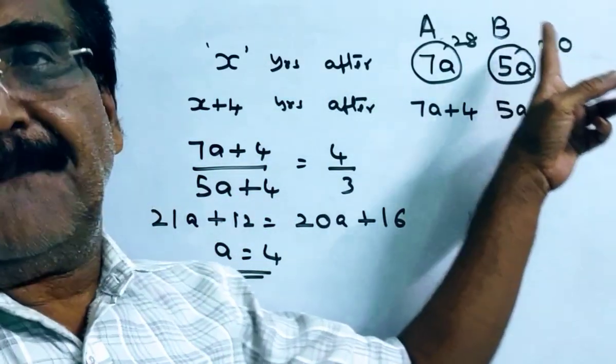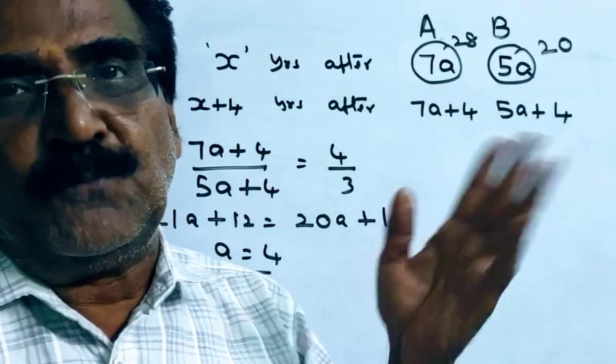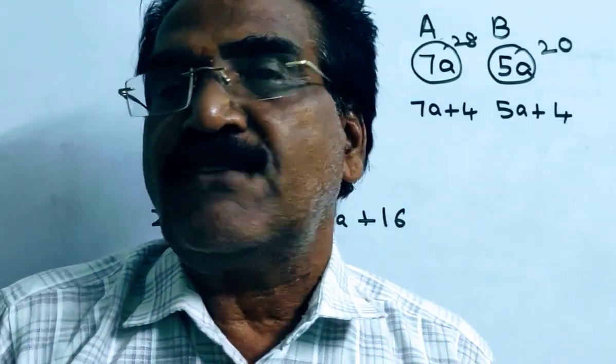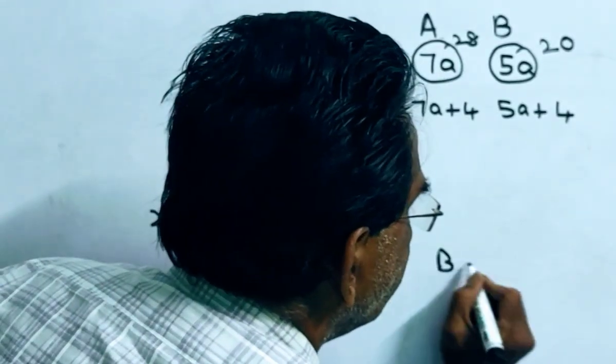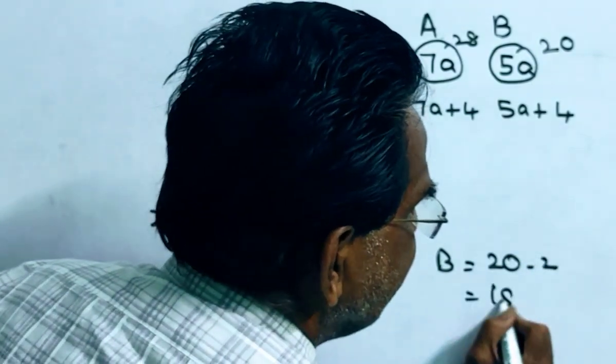The age of B after X years is 20. X is 2, so after 2 years B will be 20. Therefore, the present age of B will be 20 minus 2, that is 18.